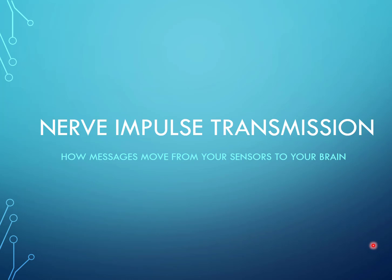Hello. This PowerPoint is designed to answer question 3 on your unit 29 biology assignment on the nervous system. Let's get started. Nerve impulse transmission: how messages move from your sensors to your brain.